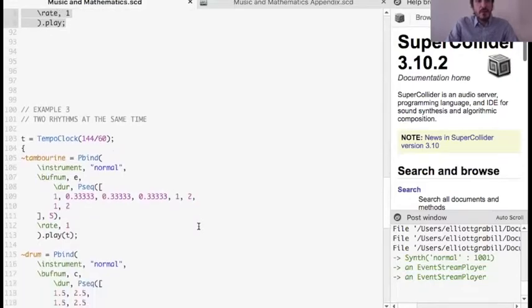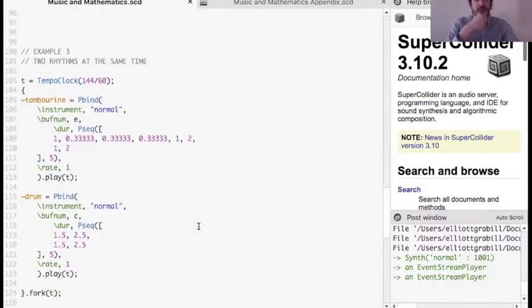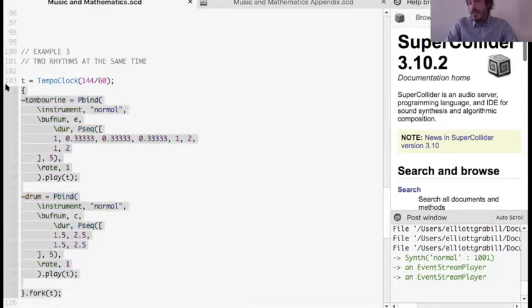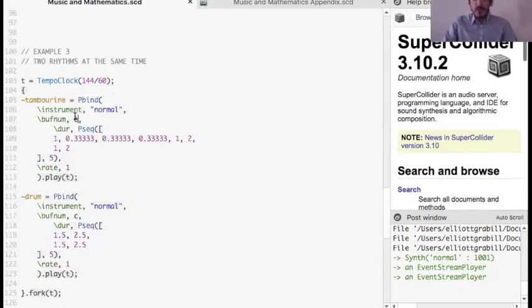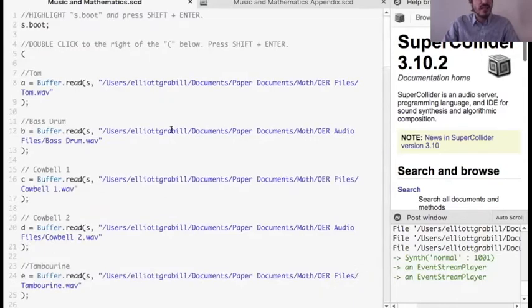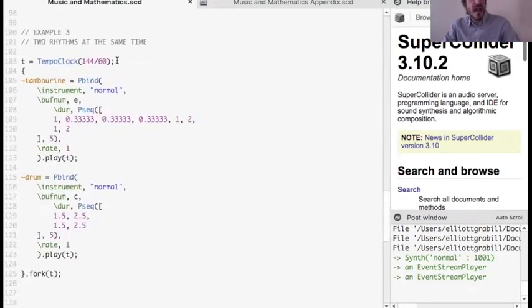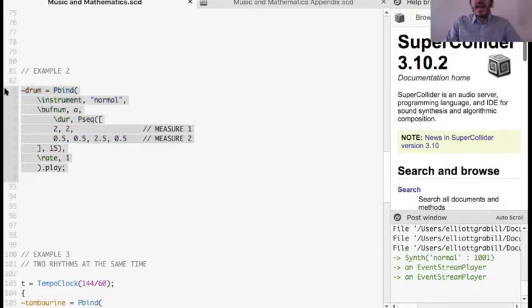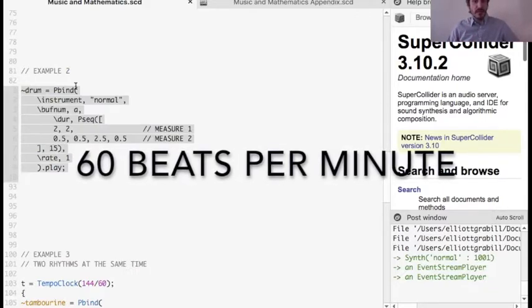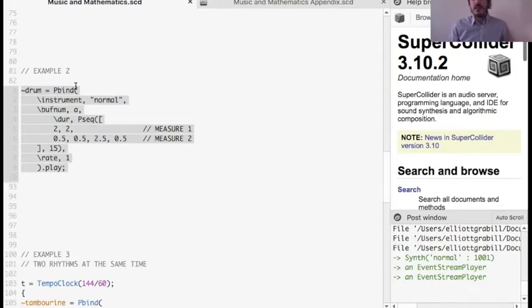Let's take a look at this third example. So you can play two rhythms at the same time by highlighting all of this and pressing shift return. And this is really interesting because we can combine two instruments. So this is instrument E, this is instrument C. So instrument E is the tambourine, instrument C is a cowbell. And I also added an extra feature here. T equals TempoClock. So for example, this has a tempo of 60 beats per minute. Why? Because we did not specify the tempo, the computer is going to default to 60 beats per minute. What does that mean? That means that each beat lasts one second because there are 60 seconds in a minute. So 60 beats per minute would mean there's a beat of one second long.